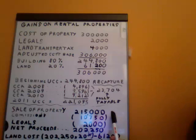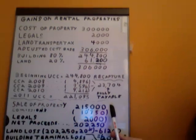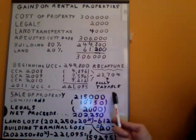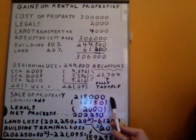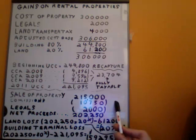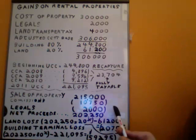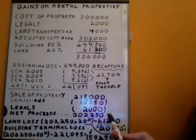Instead of selling for $450,000, we have sold the home for only $215,000. For whatever reason, we could not sell this property for more than $250,000. It cost us $10,750 in commissions and $2,000 in legal fees, so our net proceeds is $202,250.